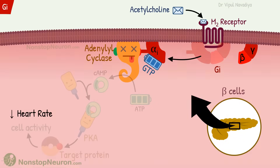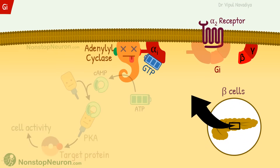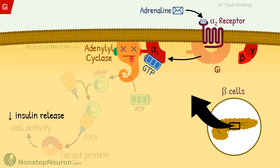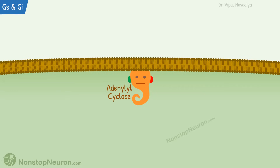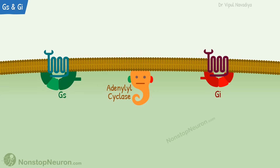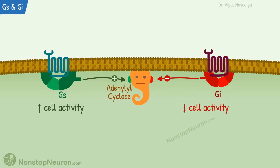Another example: pancreatic beta cells have alpha-2 adrenergic receptors. Their stimulation by adrenaline inhibits this pathway and decreases insulin release. In a nutshell, the involvement of Gi protein leads to a decrease in cellular activity. The presence of Gs and Gi in the same cell provides an opportunity to control the same function from both sides — stimulation of Gs-coupled receptors increases cellular activity, and stimulation of Gi-coupled receptors decreases it.